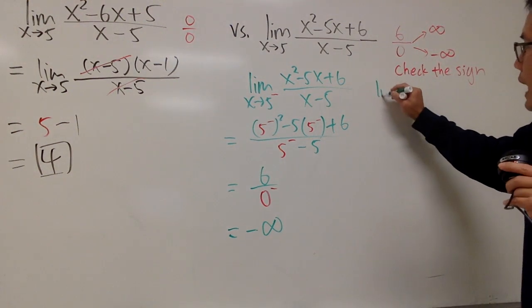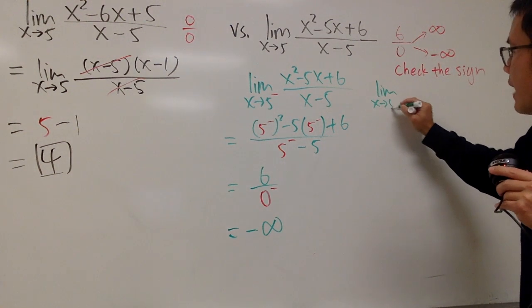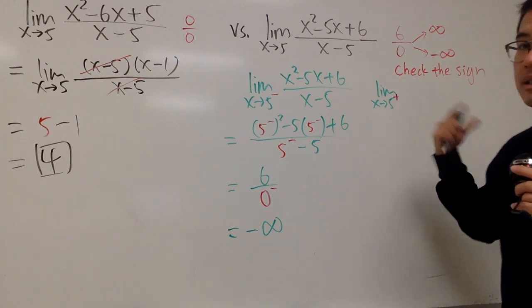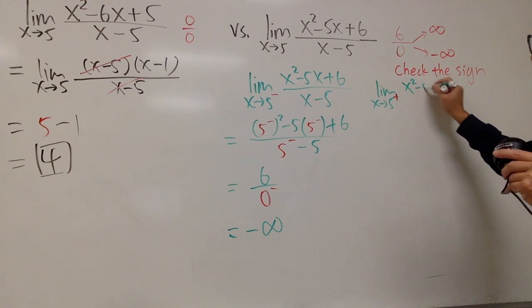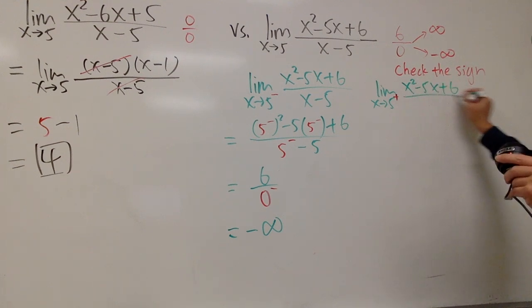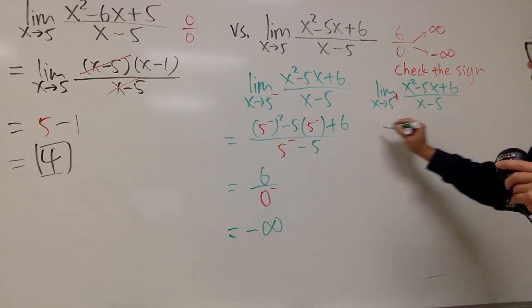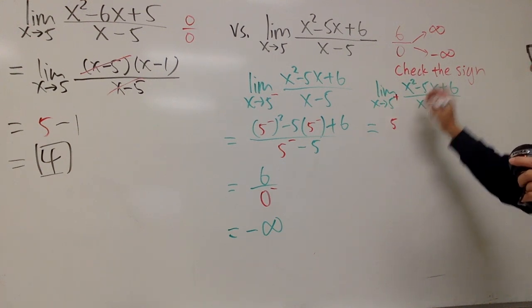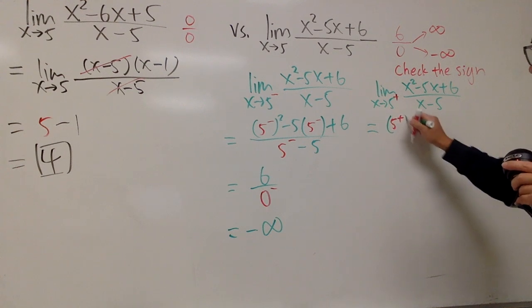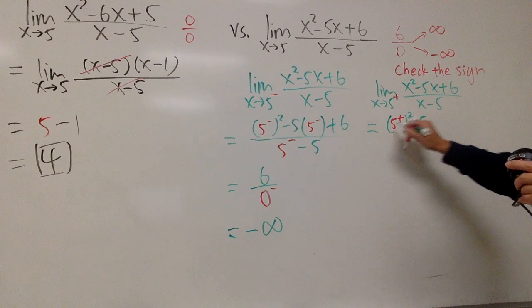On the other hand, when we have the limit as x approaching 5 with a plus, this is like 5.001. And here we have x² - 5x + 6 over x - 5. Well, we know, go ahead and just put in 5 plus. Again, the top is just going to give us 6. So it doesn't really matter if you put a 5 or 5 plus.